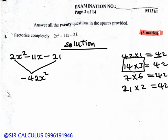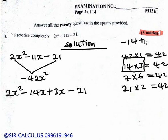So we split this as 2x squared minus 14x plus 3x minus 21. When we have negative 11x, we write it as negative 14x plus 3x. Negative 14 plus 3 gives us negative 11.